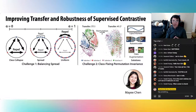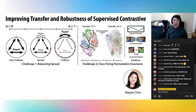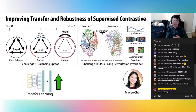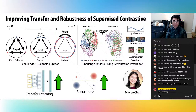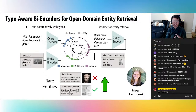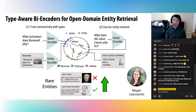In the first part, I'll talk about how to improve the transfer learning and robustness characteristics of supervised contrastive learning by addressing two challenges in the representation space: balancing the amount of geometric spread in the embeddings and addressing a property called class-fixing permutation invariance. Some simple tricks to do this result in better transfer learning and robustness performance. This is great work I did with Mei-Yi Chen. In the second half, I'll talk about applying those insights to open domain NTD retrieval, where incorporating a supervised contrastive loss can vastly improve performance on rare entities. This work was primarily led by my lab mate Megan.